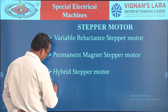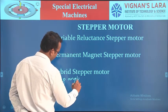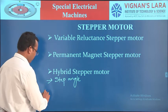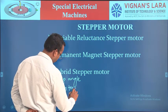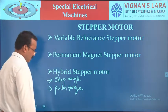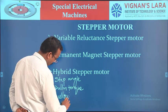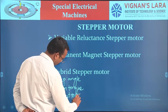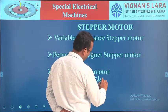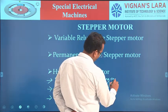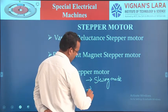What are the characteristics? The first characteristic is step size or step angle. The second one is pull-in torque. The third one is pull-out torque. The fourth one is slewing mode, and the last one is resolution.